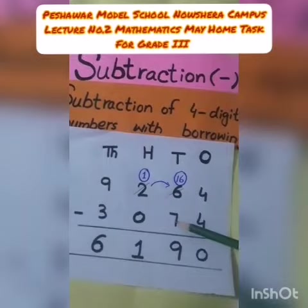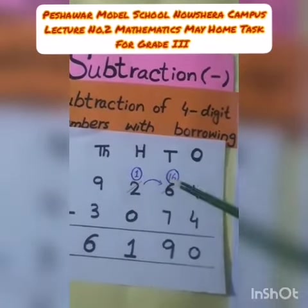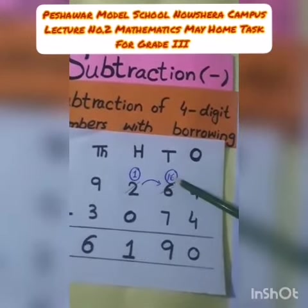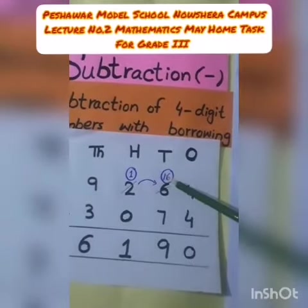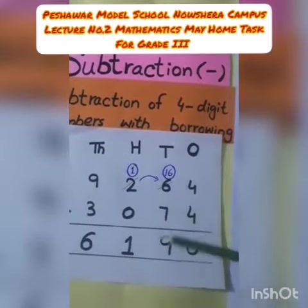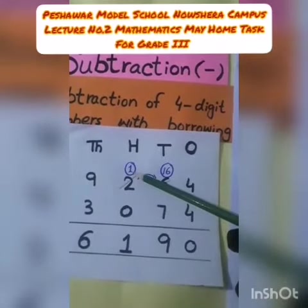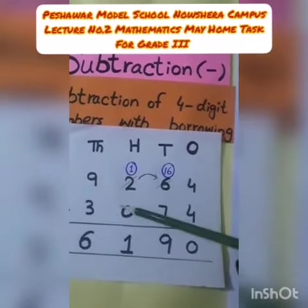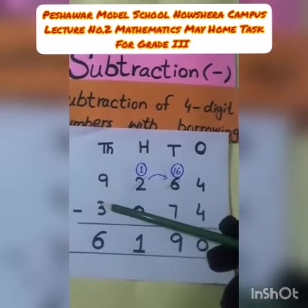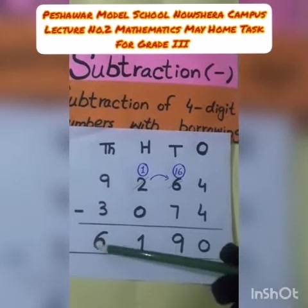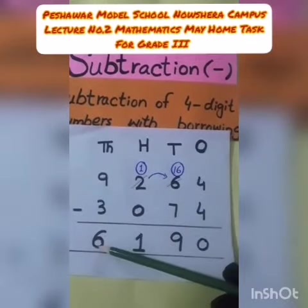Six is less than seven, so we take a borrow from the hundreds. Cut the six and write sixteen. Sixteen minus seven is equal to nine. In the hundreds place we have one left — one minus zero is equal to one. Nine minus three is equal to six.